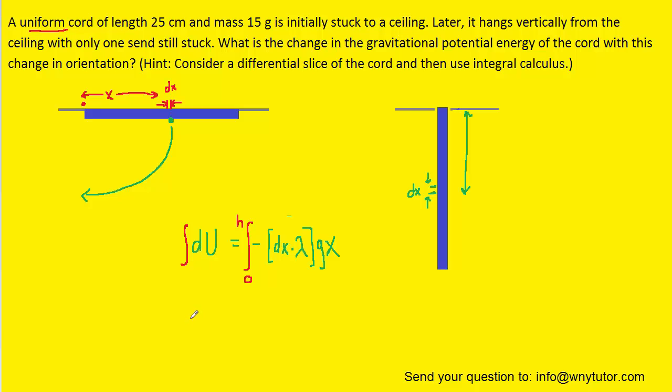Now the integral of dU will just become delta U. On the right side, we can pull out the constants of negative one, lambda, and g. And now the integral of x follows a sort of power rule. Whenever we have x raised to an integer and we integrate it, we remember from calculus that that becomes x raised to the n plus one divided by n plus one. So in our problem, the n is one, so we can use this power rule accordingly. And it becomes x squared over two.